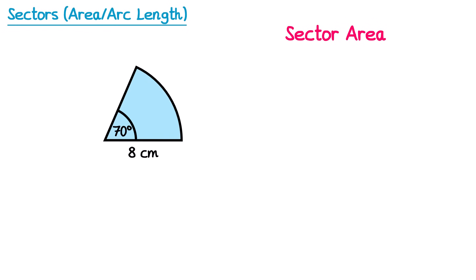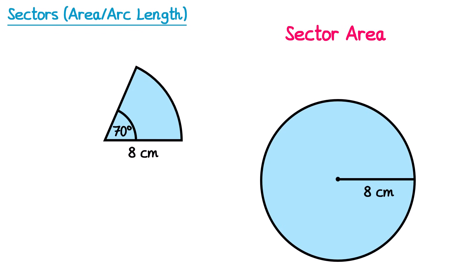To do this, we're going to first of all imagine that this sector wasn't a sector at all, and in fact it was a full circle with the same radius, 8cm. If we were to calculate the area of this circle, we would do pi times r squared, so pi times 8 squared. This would give us the area of the full circle, but we have a sector which is clearly lower. A full turn contains 360 degrees, and our sector only has 70 degrees. So the fraction of the circle that we have here is 70 out of 360.